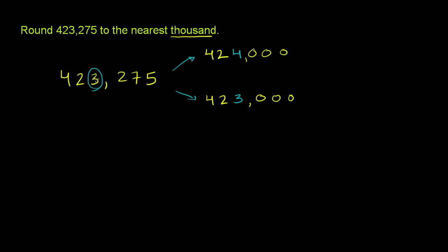we just look at the digit one place to the right of the 3. So we look at the 2 right there. If that digit is 5 or greater, you round up. So if this is greater than or equal to 5, you round up. If it's less than 5, you round down. 2 is definitely less than 5, so we just round down. So it is 423,000.